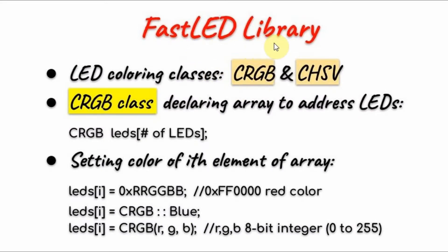The FastLED library has classes, objects, and functions which can be used to manipulate and control the LEDs on the WS2812B module. The library contains two classes for coloring the LEDs: class RGB and class HSV. For class RGB, the first thing we need to do is declare an array to address the individual LEDs. This is the C++ statement used to declare the array LEDs to class RGB, where the argument is the number of LED strips on the WS2812B module.